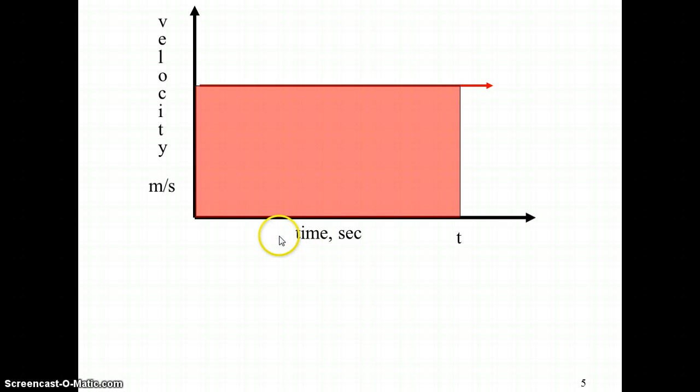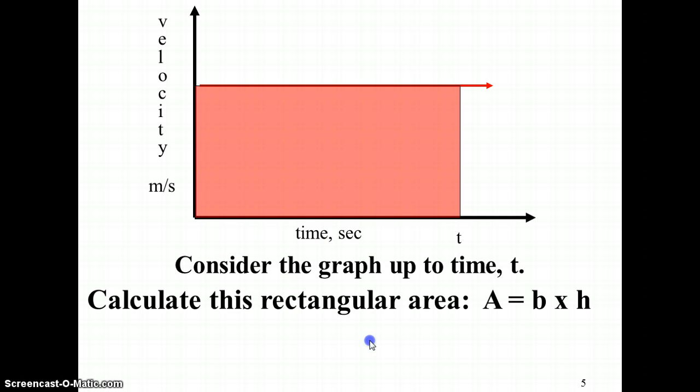And you know to take the area of a rectangle, you just need to take the base and multiply by the height. In this case, the base is time, the height is your velocity, and when you multiply those two things together, you can even just look at the units. You're taking time, you're multiplying by velocity, the seconds cancel, and you're left with units of meters, so we must be finding distance from this.